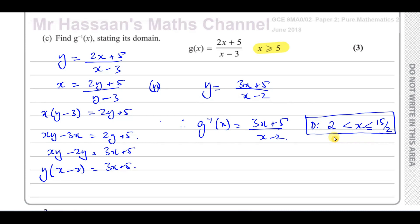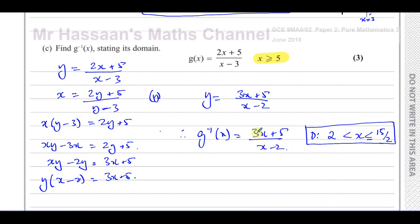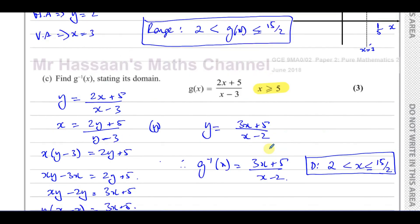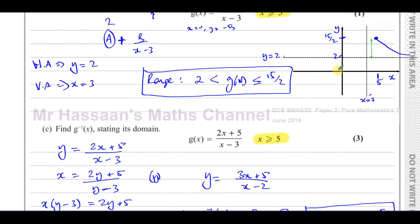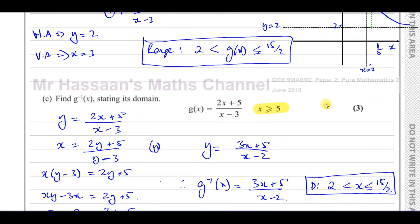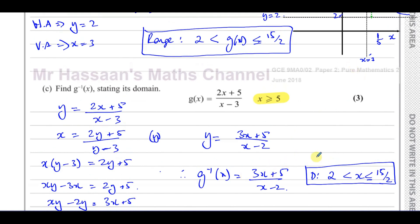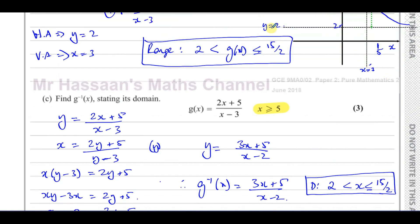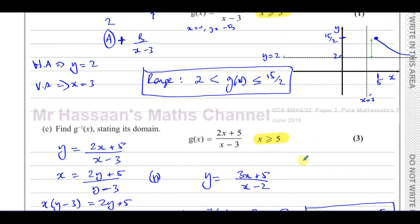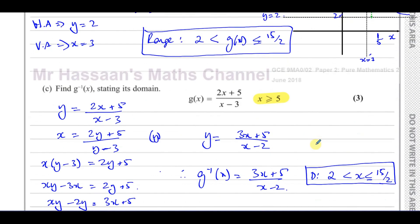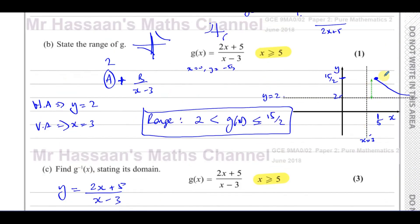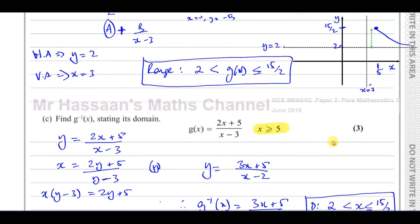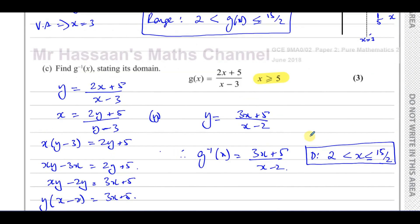We can observe that for the inverse function, the horizontal asymptote is y = 3 and the vertical asymptote is x = 2 — the opposite of what we had in the original function. This makes sense: finding the inverse swaps x and y, so the asymptotes swap over too. The graph of the inverse is a reflection of the original in the line y = x.